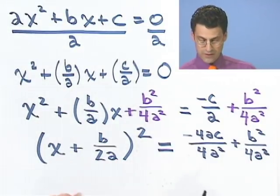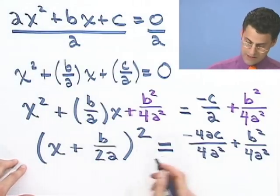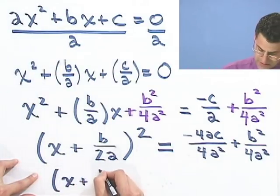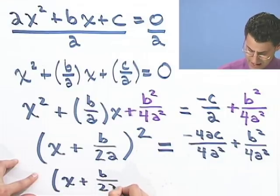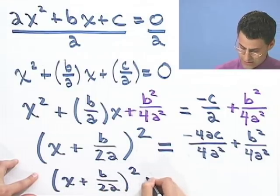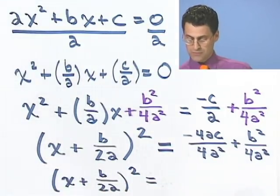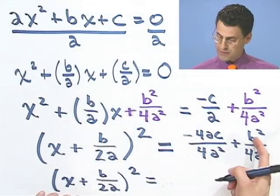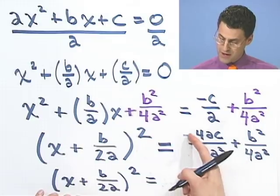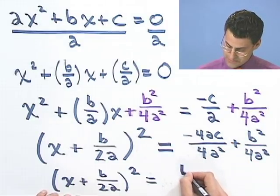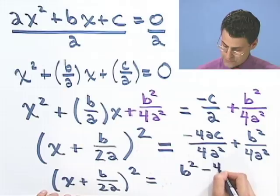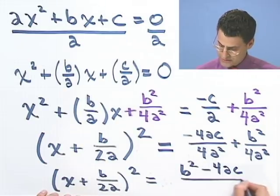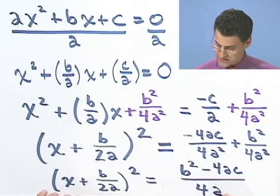So I can actually now combine all these things together. Let me write everything out here. I would have x plus b over 2a all squared equals, and if I combine this, what would it look like? It would look like, well, I've got, just to combine the top, I'll write the b first. So it's b squared minus 4ac. So I'd see b squared minus 4ac all divided by the common factor of 4a squared.